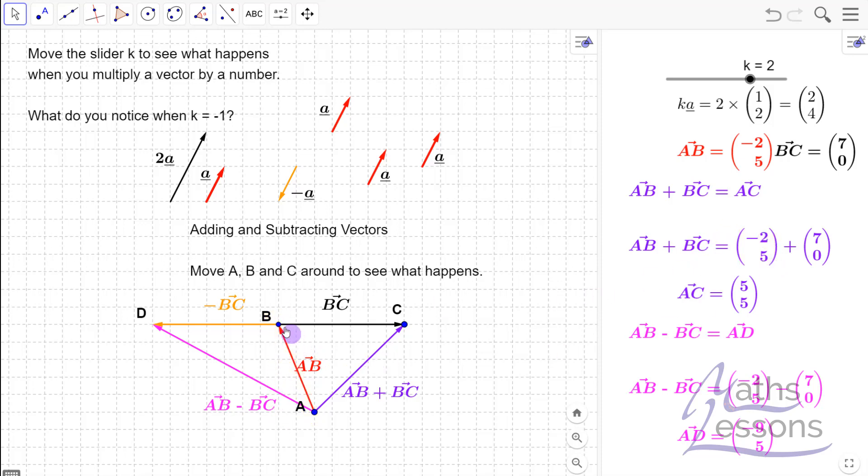And BC, look, we've just got going 7 in the x direction and nothing in the y direction. And if you add these two together, minus 2 plus 7 gives you 5; 5 plus 0 gives you 5. So AC is (5, 5). The key thing to remember when adding vectors: you have the first vector.